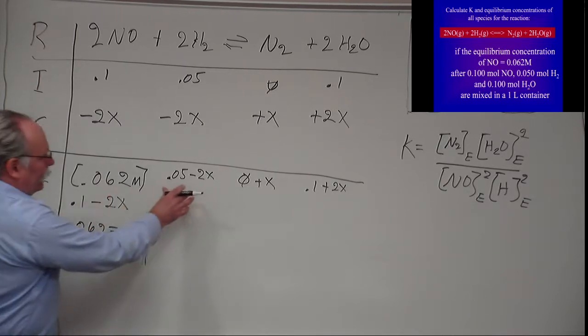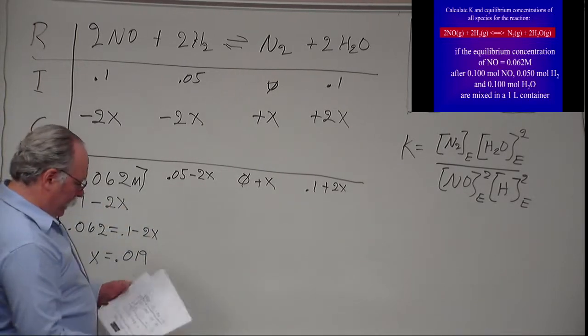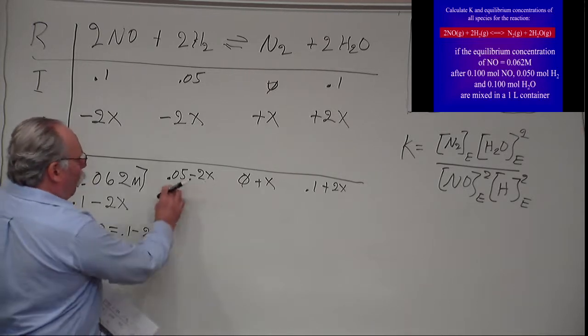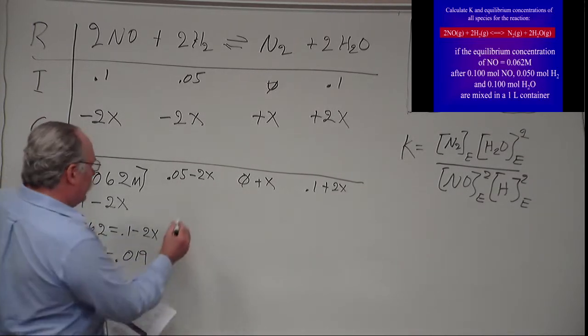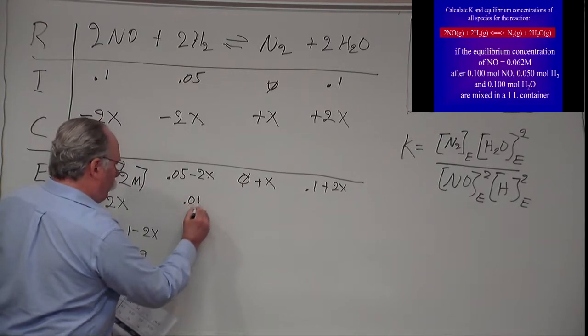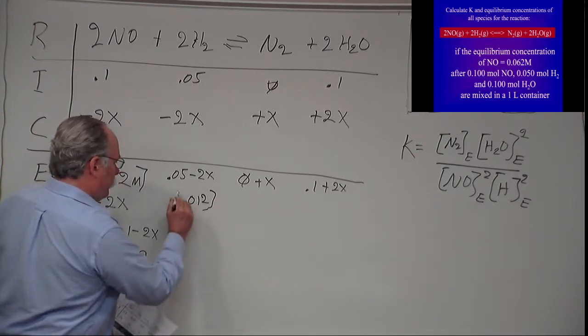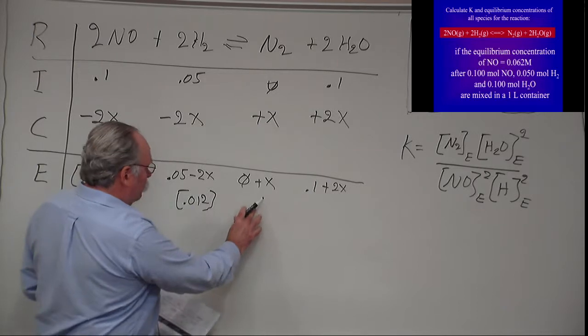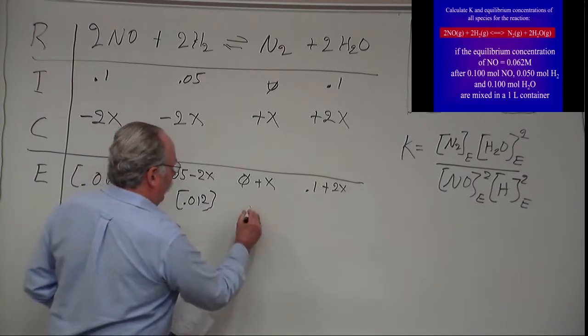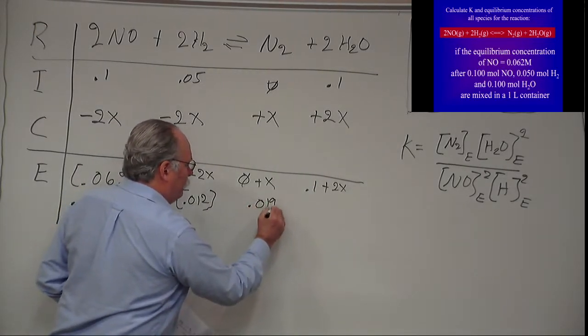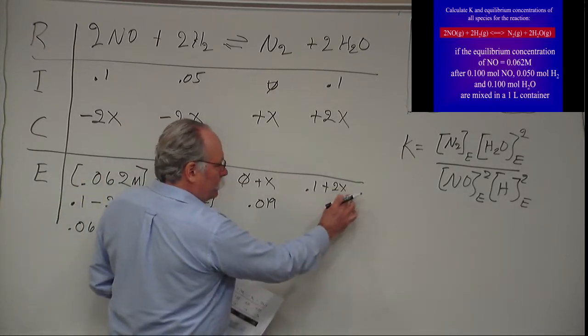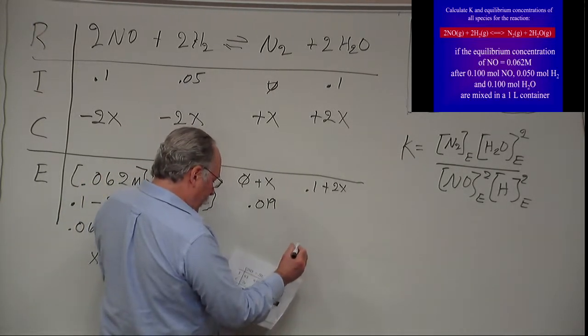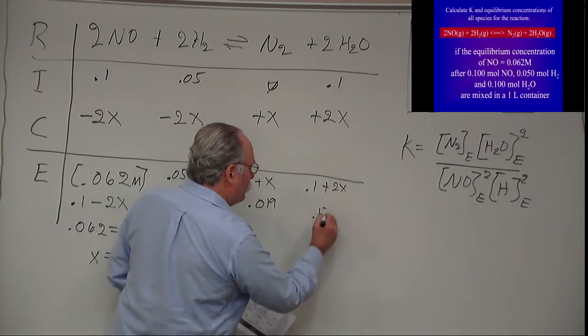So I can now calculate this value here. 0.05 minus 2 times 0.019 is equal to 0.012. I can calculate this value which is zero plus 0.019 so it's obviously 0.019. And this one is 0.1 plus 2 times 0.019 which is 0.138.